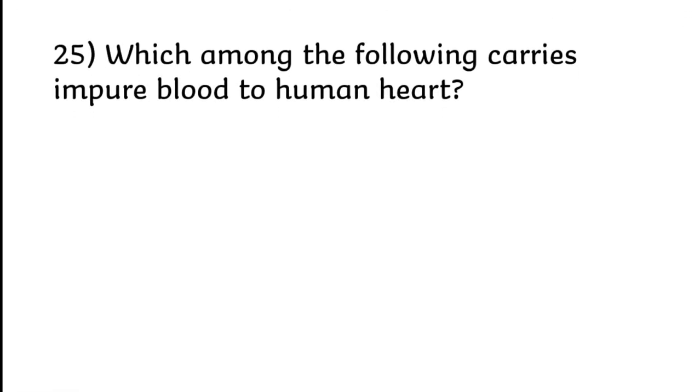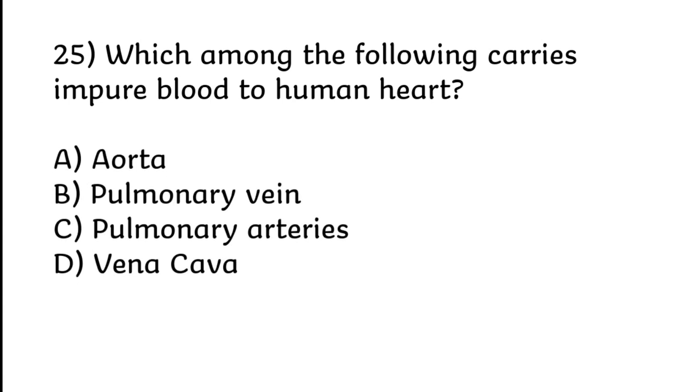Which among the following carries impure blood to human heart? Aorta, pulmonary vein, pulmonary arteries, or vena cava. Correct answer is option C, pulmonary arteries.